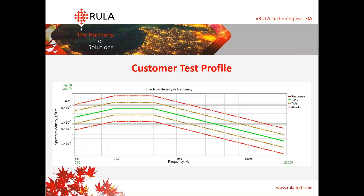A few more words about multi-channel control: in some cases in random testing, with a large testing object like a battery pack, we place sensors at different angles — some in the center, some on the sides. We can enable all these sensors as control channels, which gives higher precision during the test run. This option is quite important and can be very useful during battery testing.